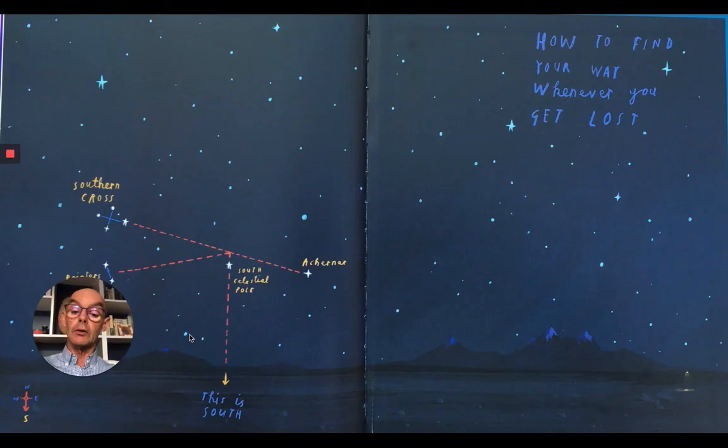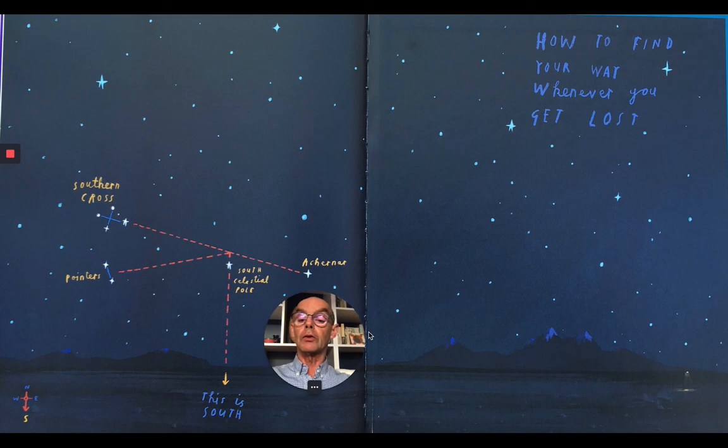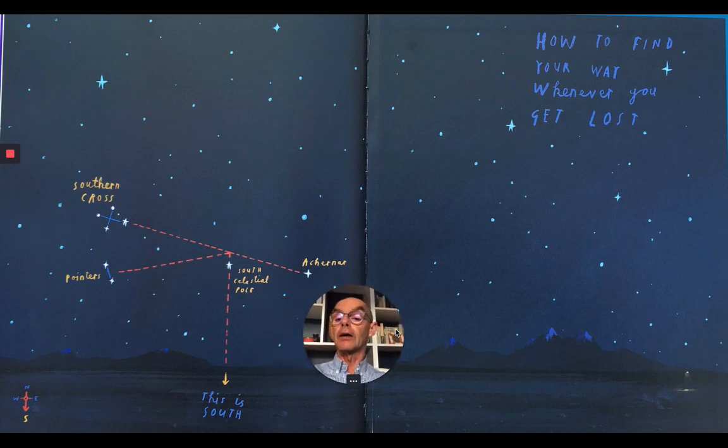And look, this is the Southern Cross. So let me just move my picture over there and you can see that there are different stars if you were in the Southern Hemisphere. How to find your way whenever you get lost. And it says the South Celestial Pole. This is South. This is how you find South. Interesting.